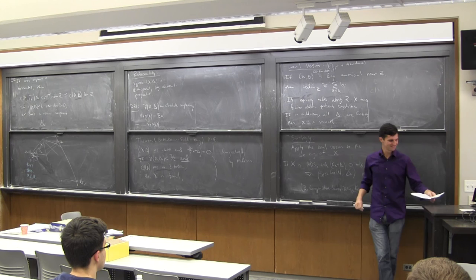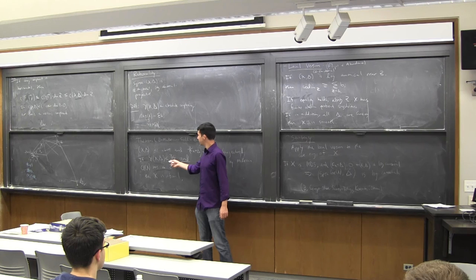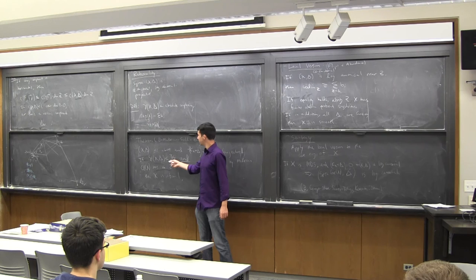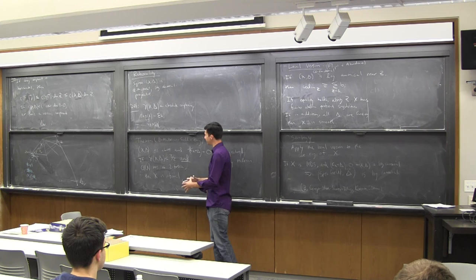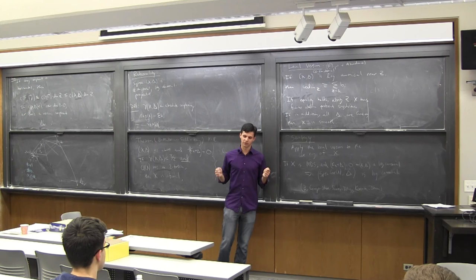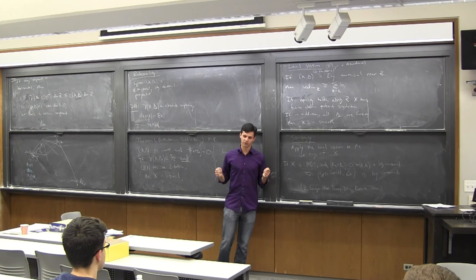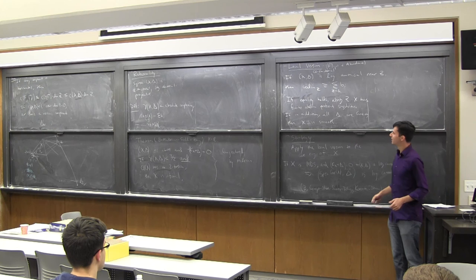For the proof, it proceeds in a similar way. The condition lets you say that the Cox ring has a compound A_1 singularity, and then you can start writing down equations. You look at the quadratic term, and this 2-torsion condition pops up because you have something like x_0^2 + x_1^2 and you want to make that look like x_0·x_1. Since x_0^2 and x_1^2 have the same class, once you realize this you can start cooking up a counterexample.